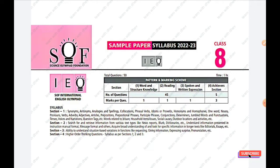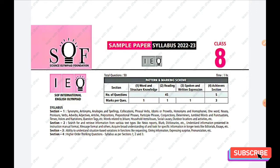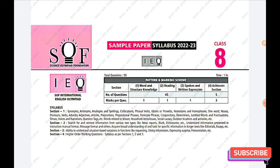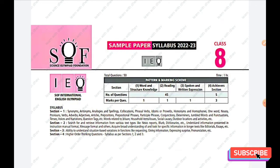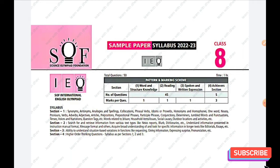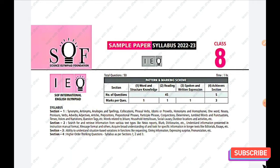In this paper you will have 50 questions with a time duration of one hour. You will have four sections: the first one is Word and Structure Knowledge, the second one is Reading, the third one is Spoken and Written Expression, and the last section is the Achiever Section. The syllabus for all four sections is given here — just go through it.